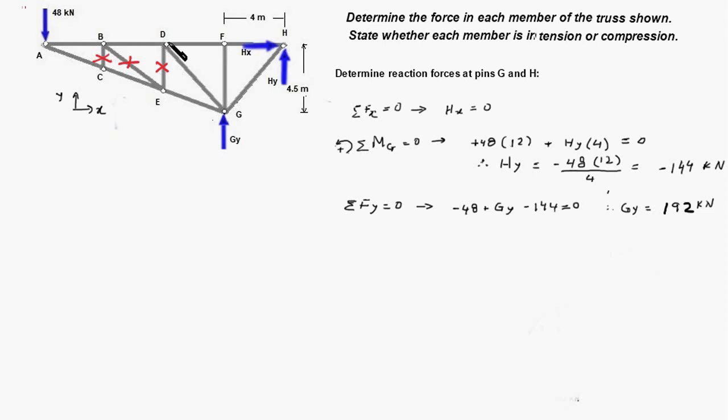And next we consider joint D. BD and DF are collinear members. This member can be ignored and the third member is DG which will be a zero force member.